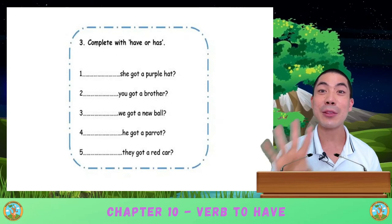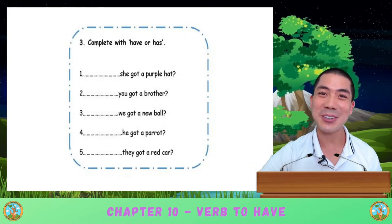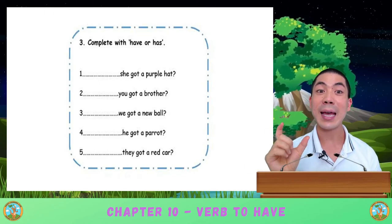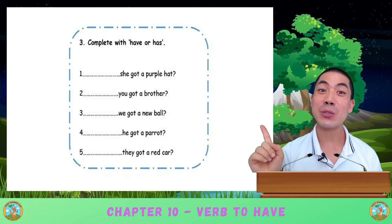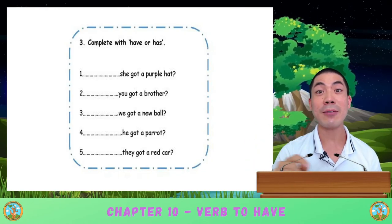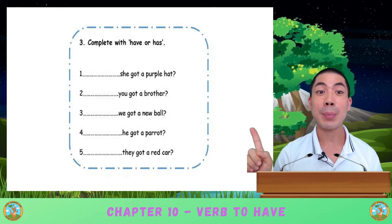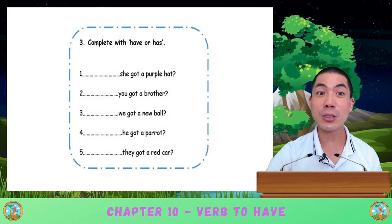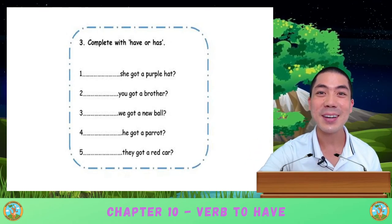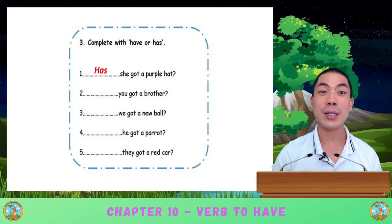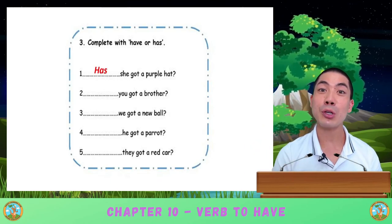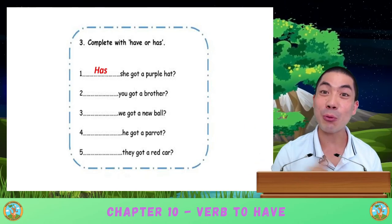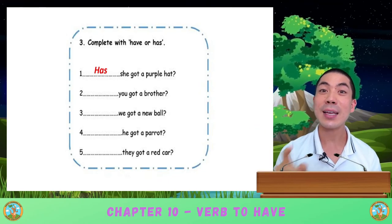When you're ready, you can go to part three. Here we have question sentences, and with question sentences you start the question with 'has' or 'have'. You must read each sentence and decide to use 'have' or 'has'. Let's do the first one together: 'Blank — she got a purple hat?' Is it 'has she got' or 'have she got'? Good — this one is 'Has she got a purple hat?' With she, we use has. Try to do the rest of these questions and write 'have' or 'has'.